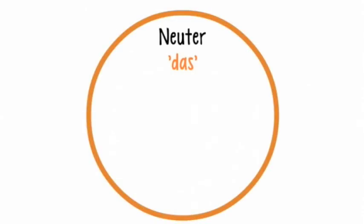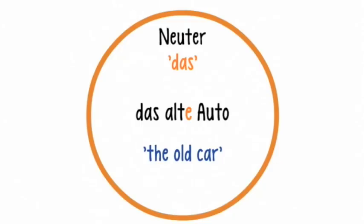Now let's have a look at the neutral form Das. Here we have the example of Das alte Auto, meaning 'the old car.' Also here, in the case of Das, the adjective alt changes to alte: Das alte Auto.